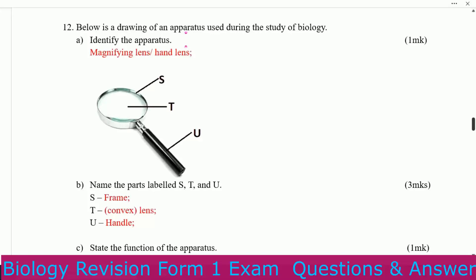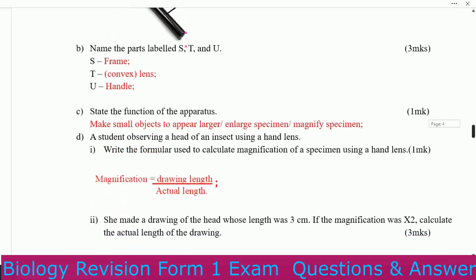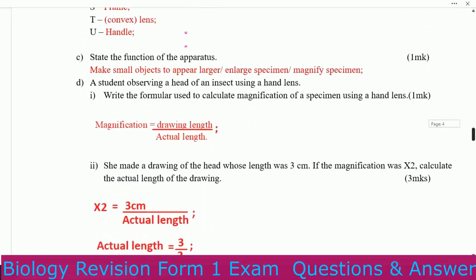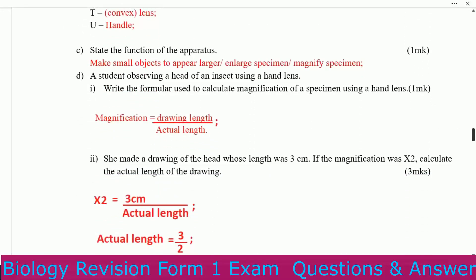State the function of the apparatus. The magnifying lens makes small objects appear bigger — it magnifies a specimen. A student is observing a hand of an insect using a hand lens.